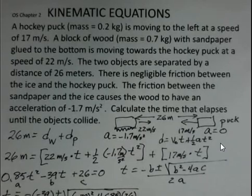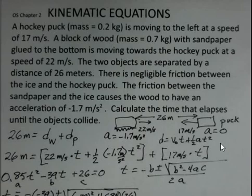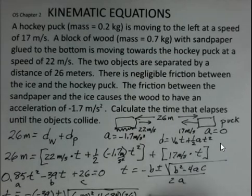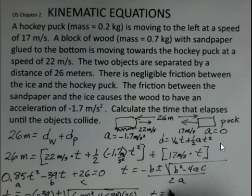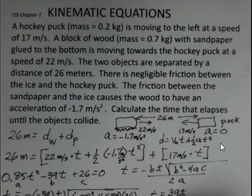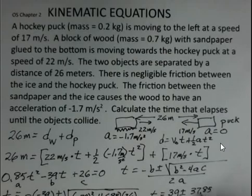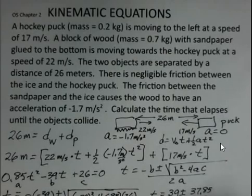So working out the b squared minus 4ac, I came up with 1432.6, and then took a square root of that. So I found that t is 39 plus or minus 37.85 divided by 1.7.